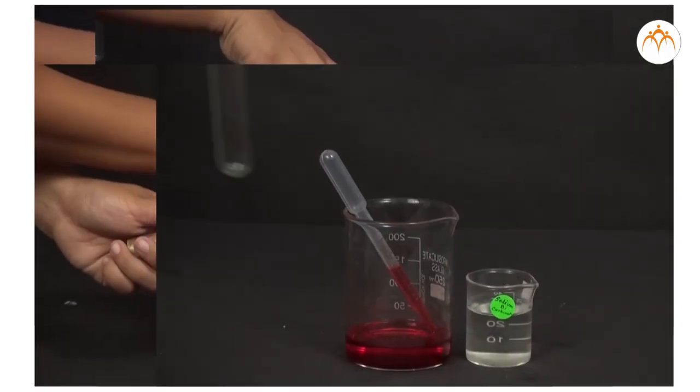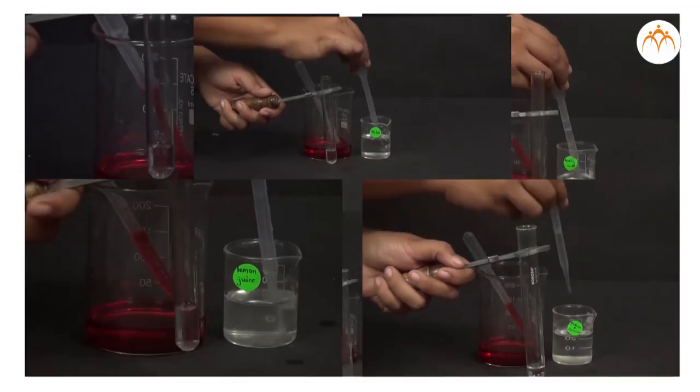Procedure B: In this experiment, we will add universal indicator to different substances and note down the pH. We now use the universal indicator. We place six clean and dry test tubes in test tube stand.